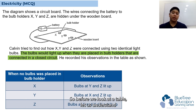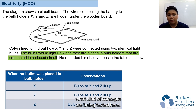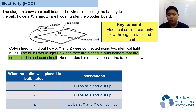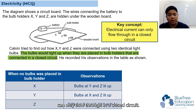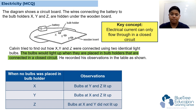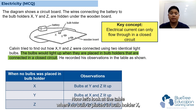So before we look at the table, let us understand what kind of concepts are being tested here. The key concept is: electrical current can only flow through in a closed circuit. Now let's look at the table.